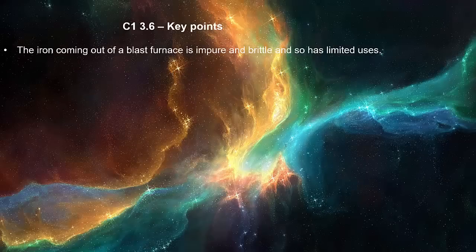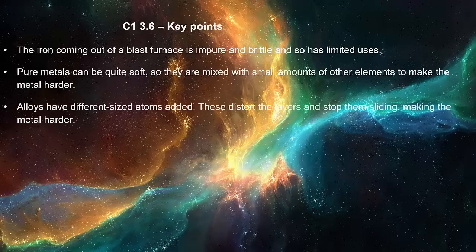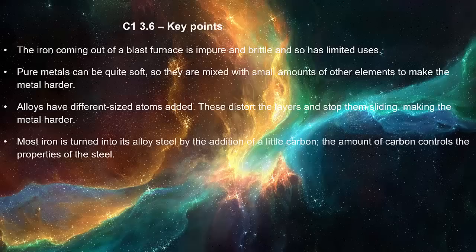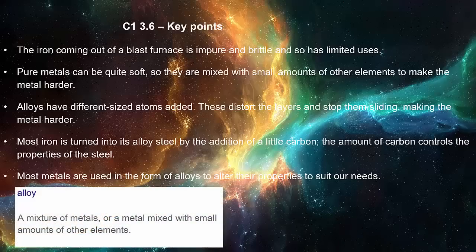The iron coming out of a blast furnace is impure and brittle, so has limited uses. Pure metals can be quite soft, so they are mixed with small amounts of other elements to make the metal harder. Alloys have different sized atoms added — these distort the layers and stop them sliding, making the metal harder. Most iron is turned into its alloy steel by the addition of a little carbon. The amount of carbon controls the properties of the steel. Most metals are used in the form of alloys to alter their properties to suit our needs. An alloy is a mixture of metals, or a metal mixed with small amounts of other elements.